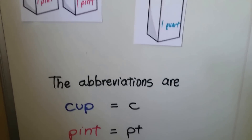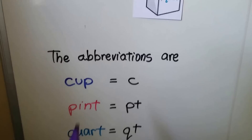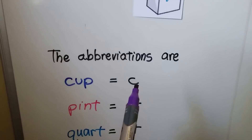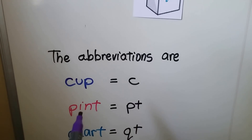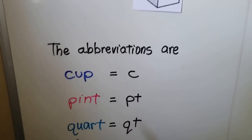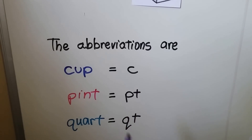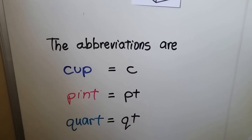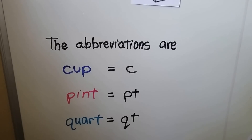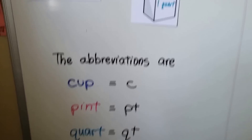And the abbreviations are: for cup, it's the letter C. For pint, it's PT. And for quart, it's QT. That's how we write them shorter.